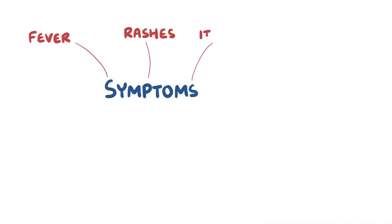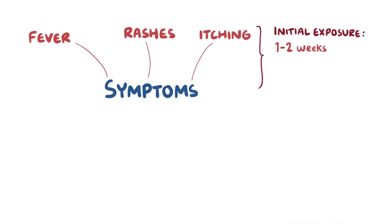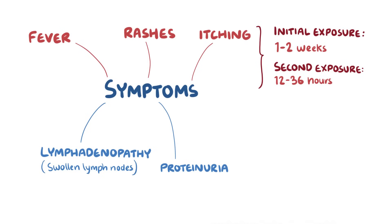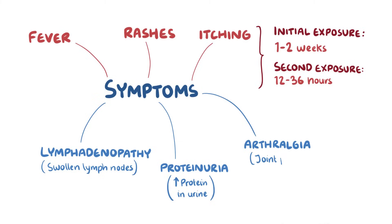The symptoms of serum sickness include fever, rashes, and itching, and these usually start within one to two weeks after the initial exposure to the serum, or 12 to 36 hours after a second exposure. There might also be lymphadenopathy, or swelling of the lymph nodes; proteinuria, which is an increase in the concentration of protein in the urine; and arthralgia, which is joint pain.